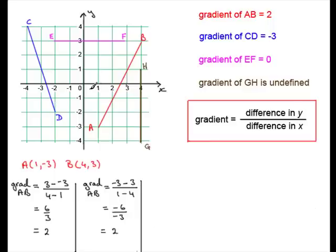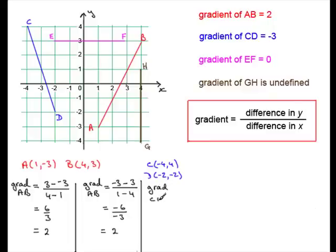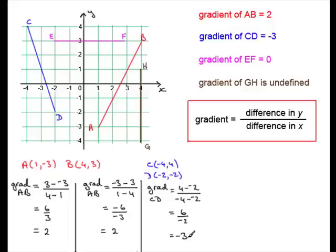Now let's look at line CD and work out its gradient by calculation. The coordinates of C are (−4, 4) and the coordinates of D are (−2, −2). The gradient of CD equals the difference in the y coordinates: 4 minus −2, all divided by the difference in the x coordinates: −4 minus −2. So 4 minus −2 is 6, all divided by −4 plus 2, which becomes −2. And 6 divided by −2 is −3. So the gradient of CD is −3, which agrees with what we observed.